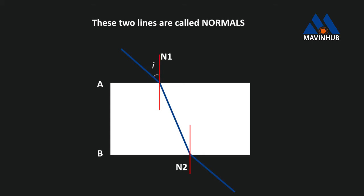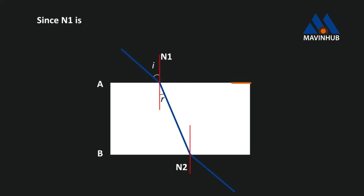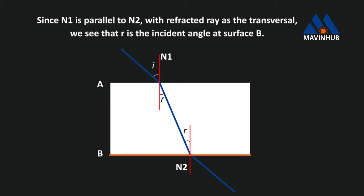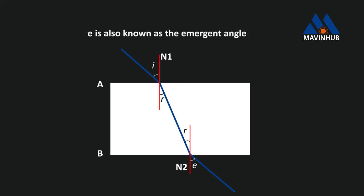Let's call the normals N1 and N2. I is the incident angle and R is the refracted angle at surface A. Since N1 is parallel to N2, with the refracted ray as the transversal, we see that R is also the incident angle at surface B. At B, E is the refracted angle, which is also known as the emergent angle. The emergent ray is parallel to the incident ray.